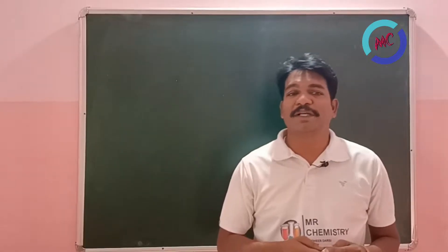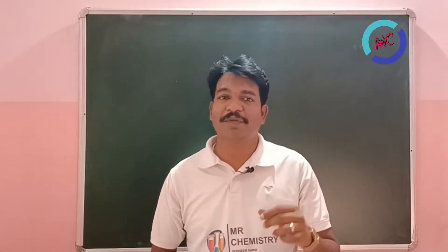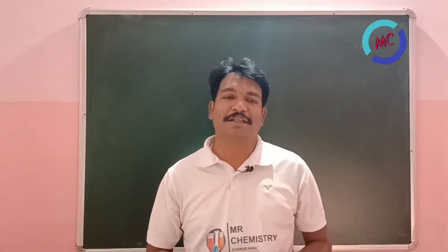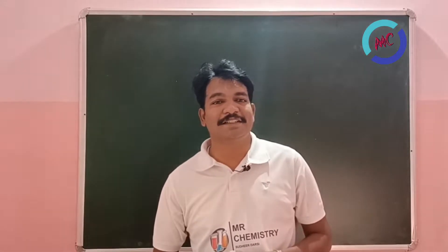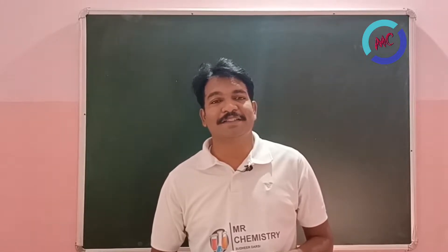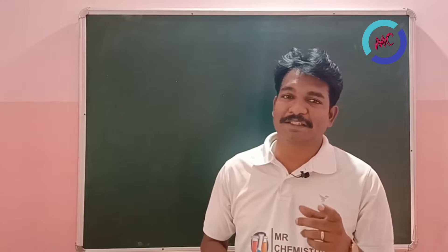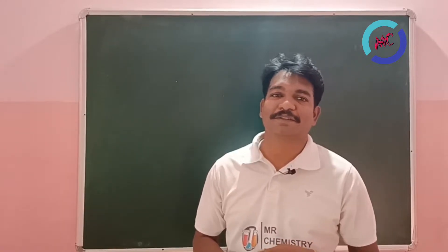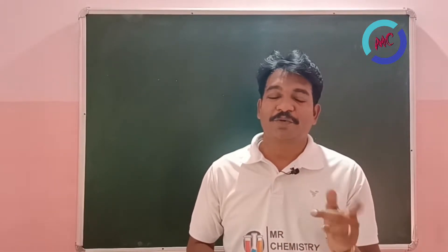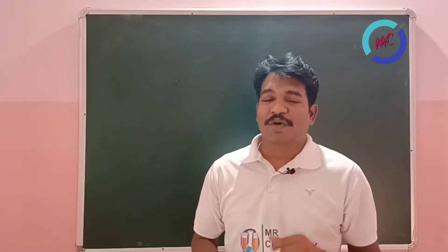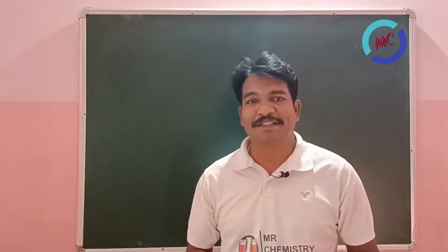To find spin multiplicity, first you have to know how many unpaired electrons are there in the given element or ion. Then use the formula: spin multiplicity = 2S + number of unpaired electrons. Here 2S means 2 into the spin quantum number S, taking the positive value of +1/2. So 2 × (1/2) + number of unpaired electrons gives the spin multiplicity.